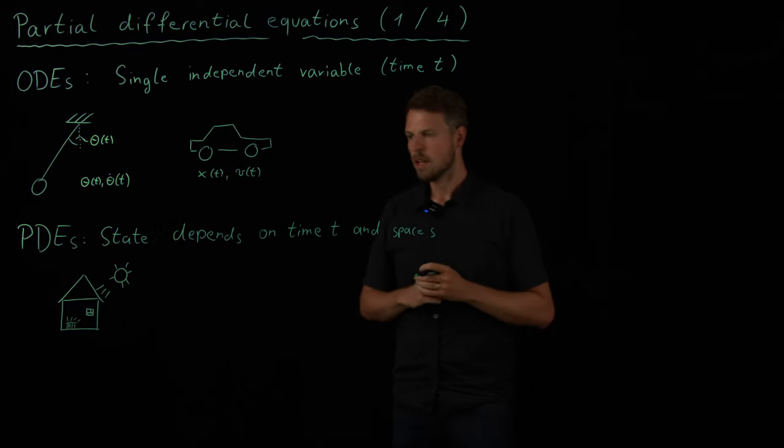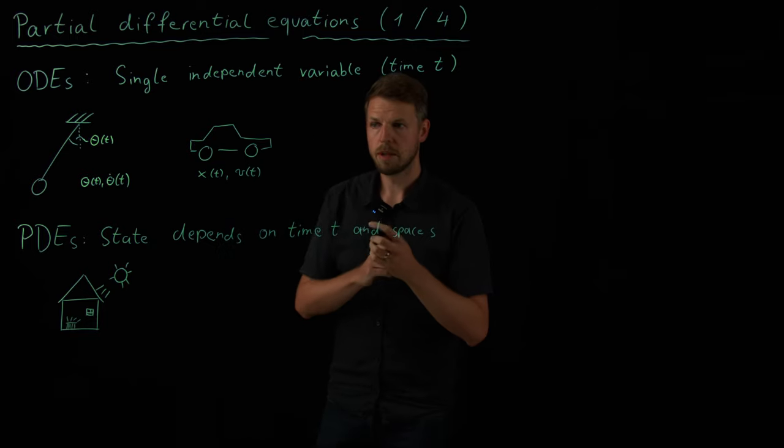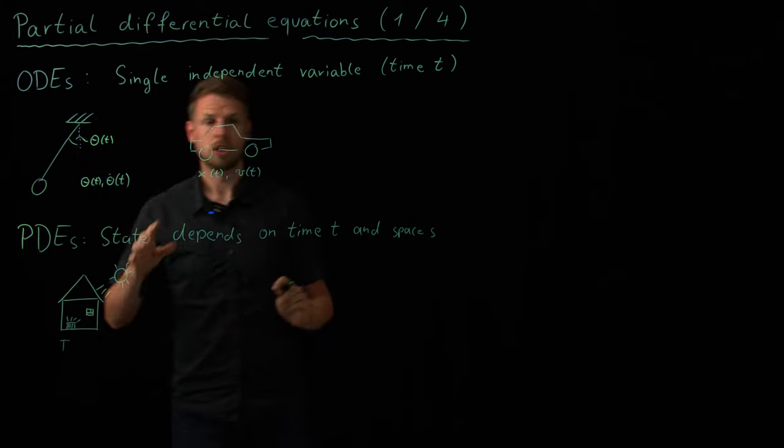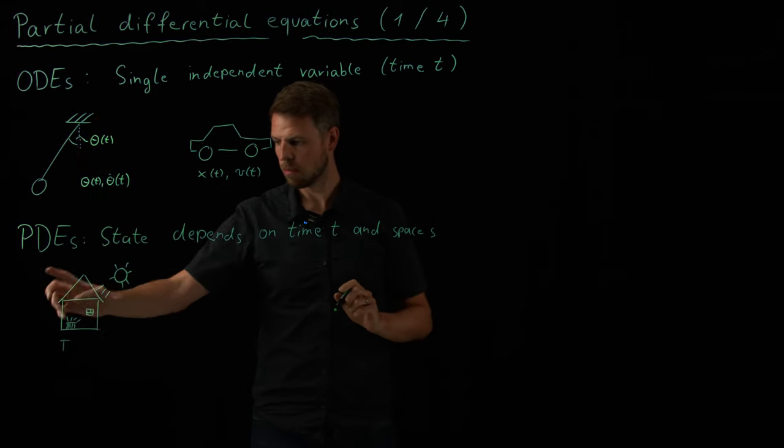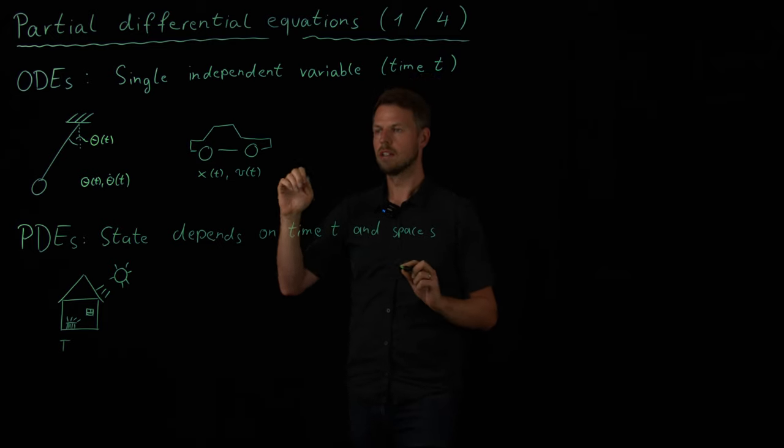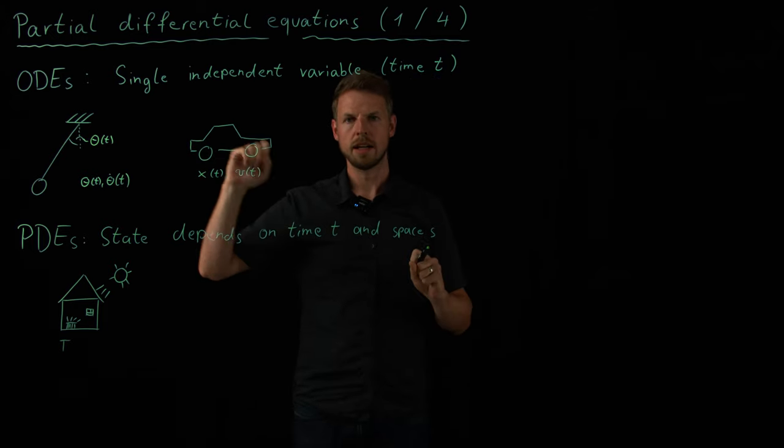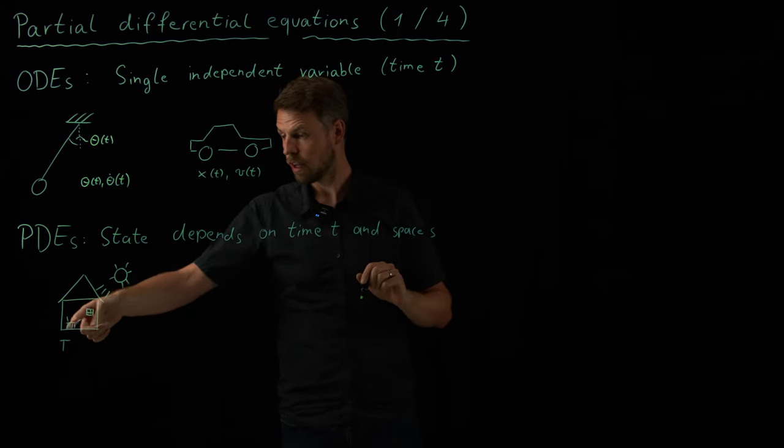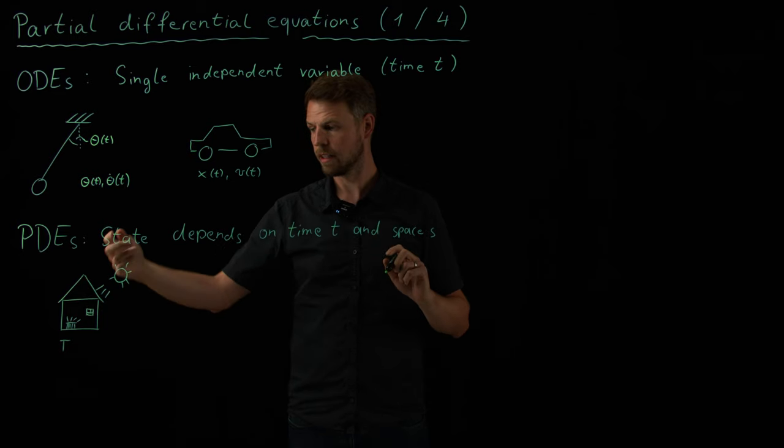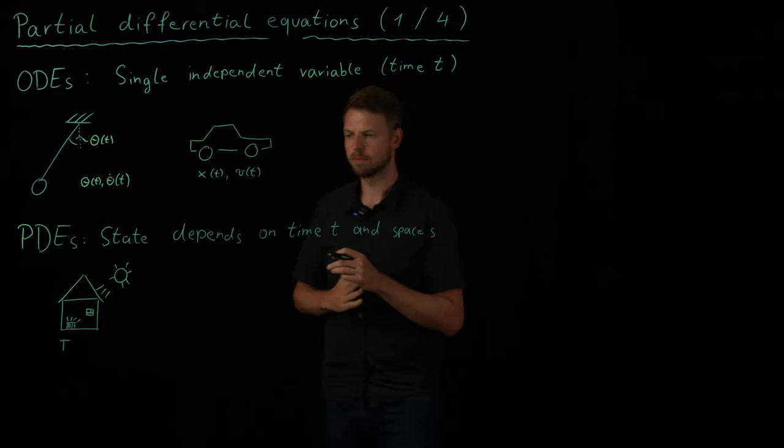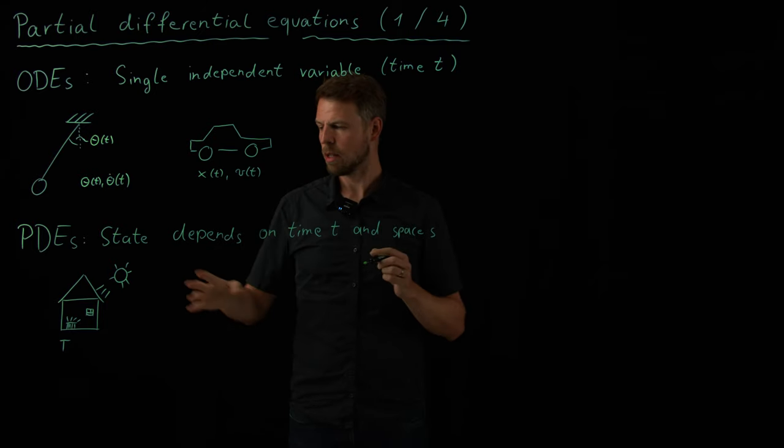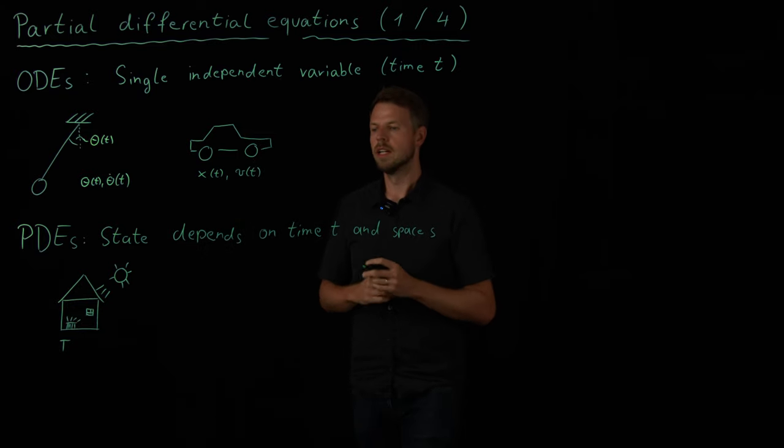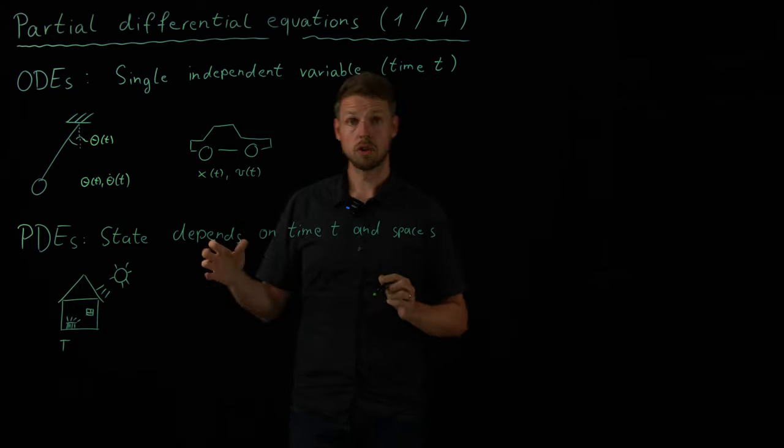So we have a system and what we are interested in is maybe the room temperature. So let's call this the temperature T. And obviously, the temperature in this description in my room does not only depend on time T, it's also important where I measure the temperature. So near the radiator or my heating device, the temperature is likely higher than maybe near to the window where cold air may come in. And on the other day, next day, maybe different sun conditions or the outside temperature is different. The temperature distribution may also be different. So it also depends on time.